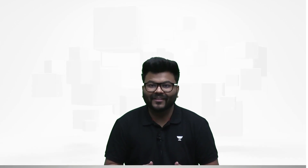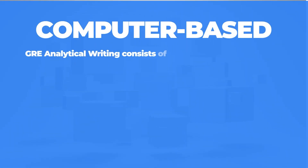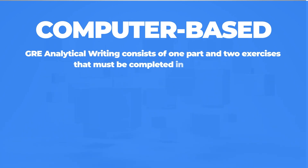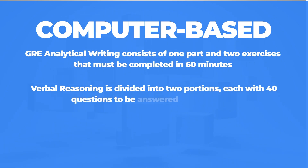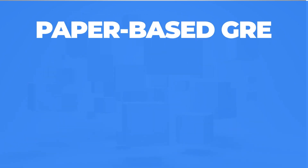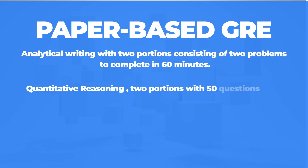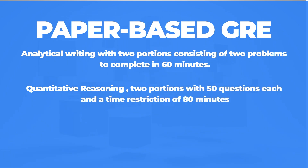You should be aware that there are two sorts of tests: computer-based and paper-based. For the computer-based GRE: Analytical Writing consists of one part with two exercises to be completed in 60 minutes; Verbal Reasoning is divided into two portions with 40 questions each to be answered in 60 minutes; and Quantitative Reasoning is divided into two portions of 40 problems each with a time restriction of 70 minutes. For the paper-based GRE: Analytical Writing has two portions with two problems to complete in 60 minutes; Quantitative Reasoning includes two portions with 50 questions each and a time restriction of 80 minutes.